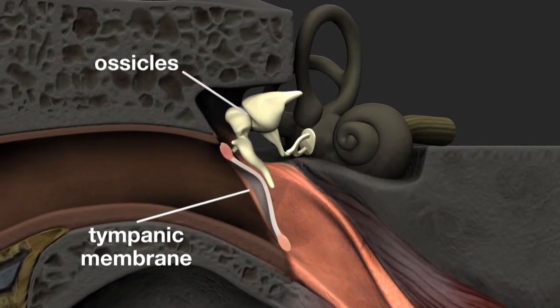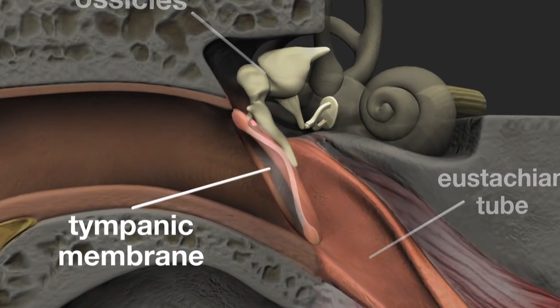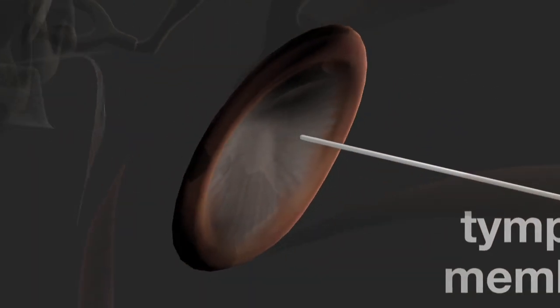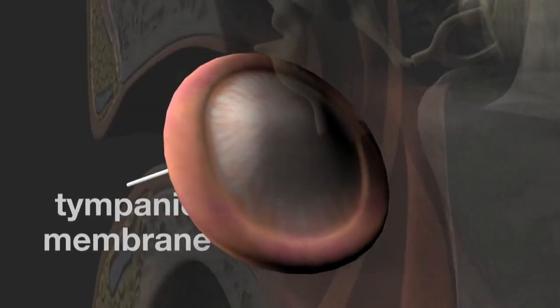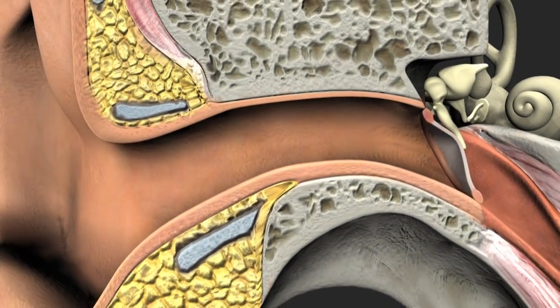The ossicles and the eustachian tube. The tympanic membrane is concave with an area of between 60 and 90 millimeters and an average thickness of just seven hundredths of a millimeter, and it has a very rich blood supply.